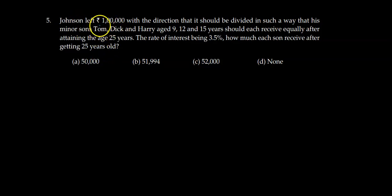Johnson left Rs. 1 lakh with the direction that it should be divided in such a way that his minor sons Tom, Dick and Harry who are aged 9, 12 and 15 years should each receive equally after attaining the age of 25 years. The rate of interest is 3.5%. How much each son receives after reaching the age of 25 years?